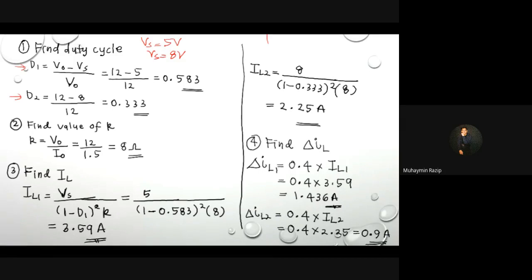Second step: once we know the two duty cycle values, we need to find the value of R. To proceed with finding the rest of the parameters, you need R. Using Ohm's law — V = IR — the output voltage is 12V and the output current is 1.5A, so R = 12 / 1.5 = 8 ohms.